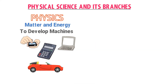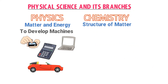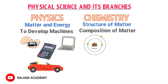The second important branch of physical science is chemistry. In chemistry, we study about the structure of matter, composition of matter, and different chemical reactions or chemical combinations of different substances. For example, chemistry teaches us that the smallest particle of any matter is an atom.